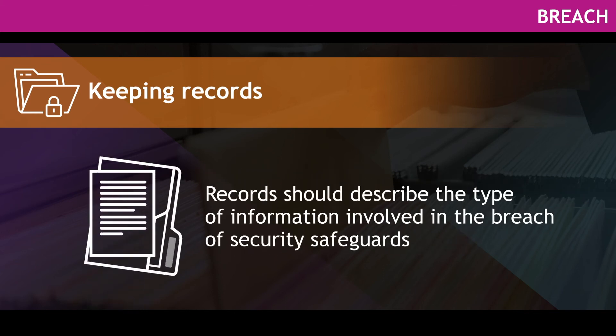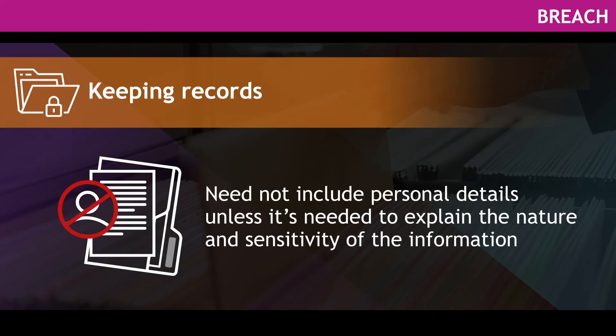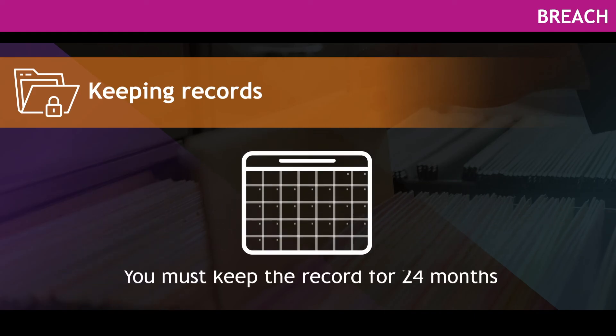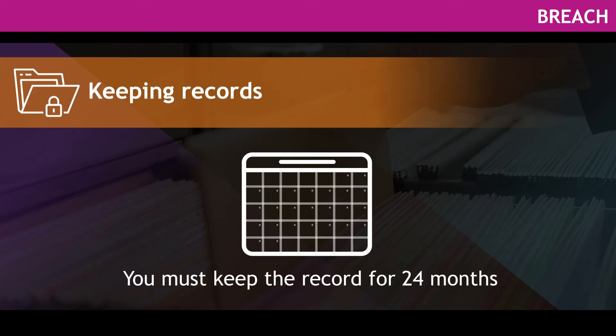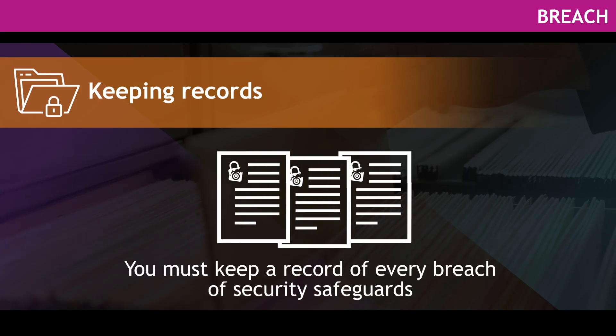Records should describe the type of information involved in the breach of security safeguards, but need not include personal details unless it's needed to explain the nature and sensitivity of the information. You must keep the record for 24 months from the day on which you determine that the breach has occurred. Remember, you must keep a record of every breach of security safeguards, not just those that are considered to present a real risk of significant harm to individuals.